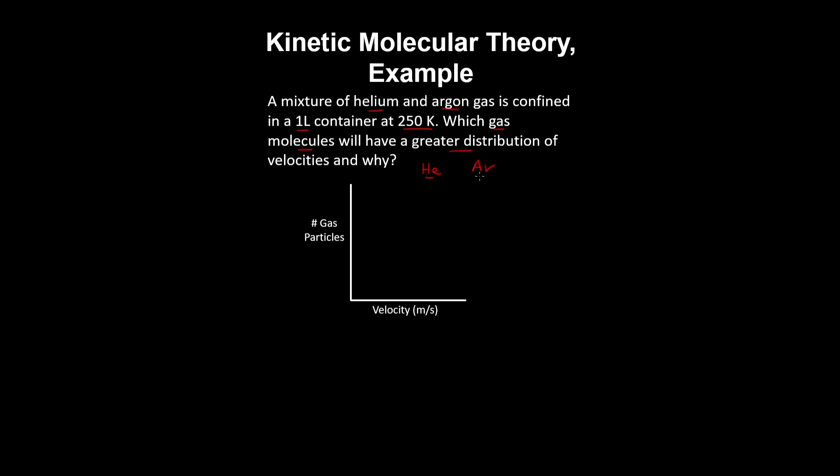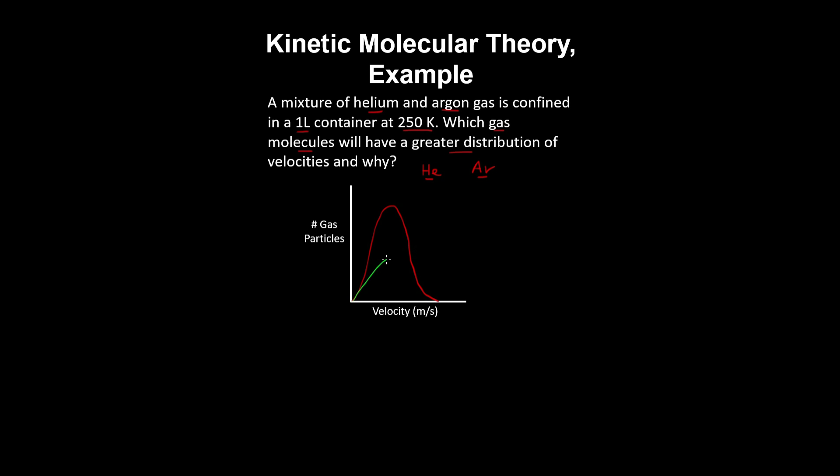Given the mass of a helium atom is smaller than that of argon, then the distribution of velocities of the argon gas particles looks something like this, and for helium they'd look something like this.